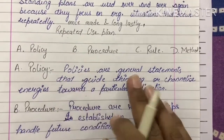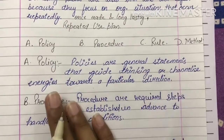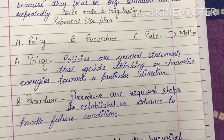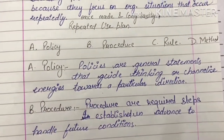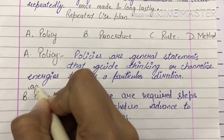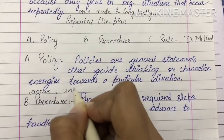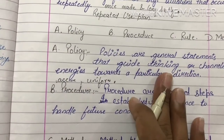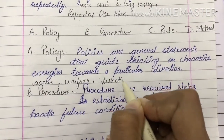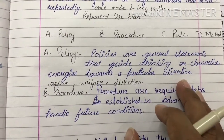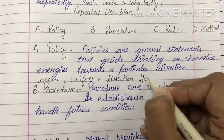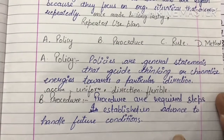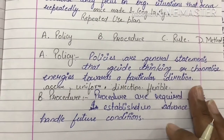Policies are general statements that guide thinking or channelize energy towards a particular direction. Policies वो general guidelines होती हैं जो हमारे actions और decision making में uniformity लाती हैं, यानि आपके decisions को more accurate करने में help करती हैं. They provide directions to the managers for an organization. They are also flexible and may change as per requirement. जैसे कि goods के लिए sales procedure आप on cash basis या on credit basis कर सकते हो, या reserves maintain करने के लिए policies हो सकती हैं.